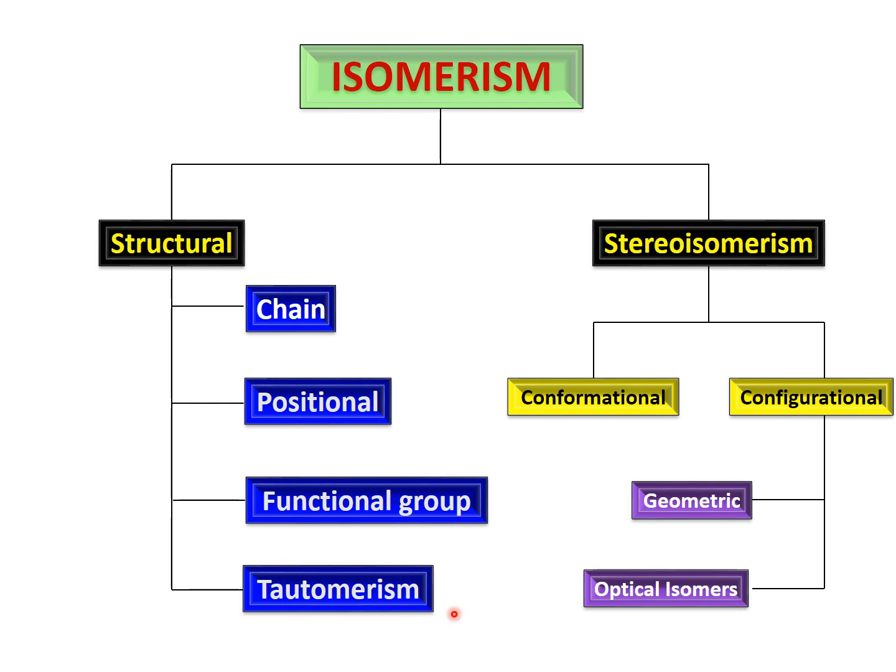Then we have tautomerism, another type of isomerism. A very famous example is keto-enol tautomers. You can have a keto form or an enol form of a molecule — we will discuss this in detail later. The molecular formula is the same, but one isomer has a ketone functional group and the other has an enol functional group. They are tautomers of each other and are interconvertible.